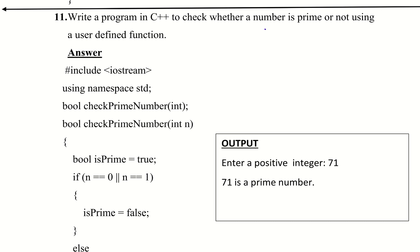So we will check whether a number is prime. I will say that the function to be called is checkPrimeNumber. The data type is bool. The bool data type will return only two values: either true or false.